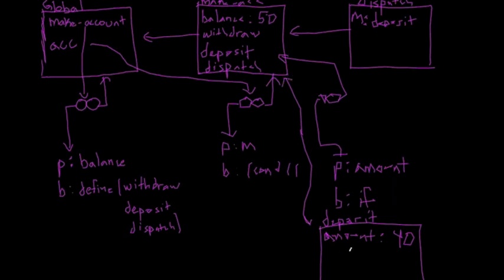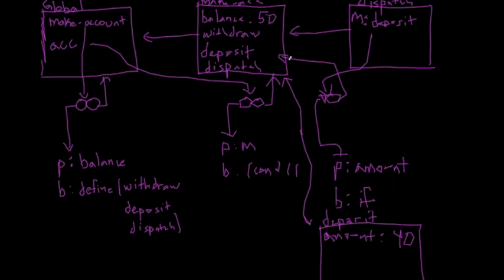In the actual deposit code, you see a set! operator, which basically sets the balance to the balance plus the amount. So when we call deposit, we are essentially updating this balance value. When we define make-account, we are pointing to this dispatch procedure. When we call dispatch on the message deposit, that message points to the procedure object for deposit. When we call ACC deposit on the amount 40, we are updating the balance here to the number 90, and then it points back to the global environment and gets returned as 90.